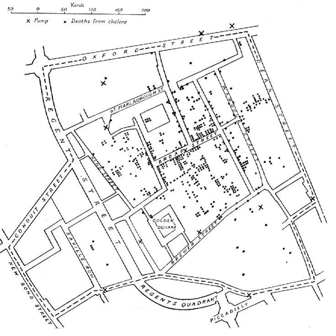Spatial interaction models are gravity models. They estimate the flow of people, material or information between locations in geographic space. Factors can include origin propulsive variables such as the number of commuters in residential areas, destination attractiveness variables such as the amount of office space in employment areas, and proximity relationships between locations measured in terms such as driving distance or travel time.